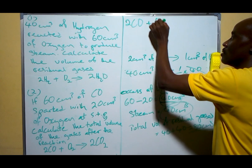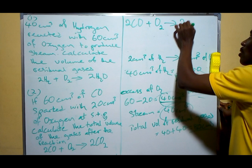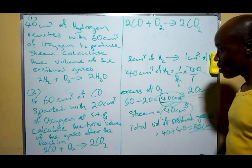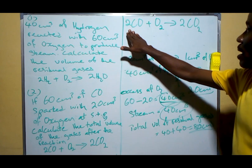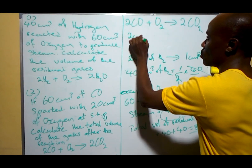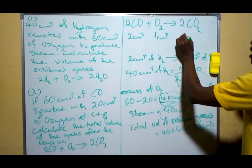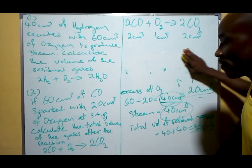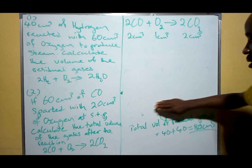It will take you to jail for disobeying the law, so you must make sure you are a law-abiding citizen of chemistry nation! So here we have our chemical equation. We have 2 cm³ of CO to 1 cm³ of O₂ giving 2 cm³ of CO₂ — they are almost in the same ratio as before.